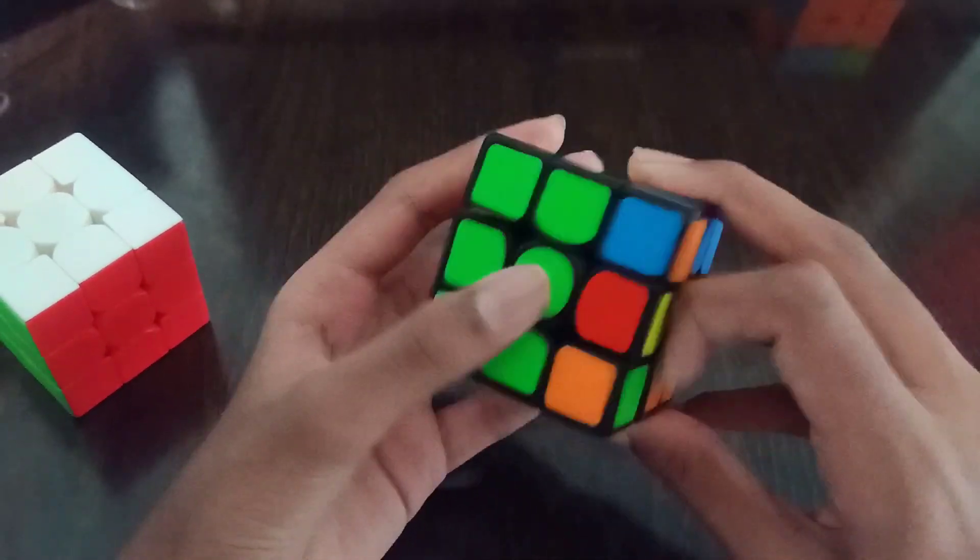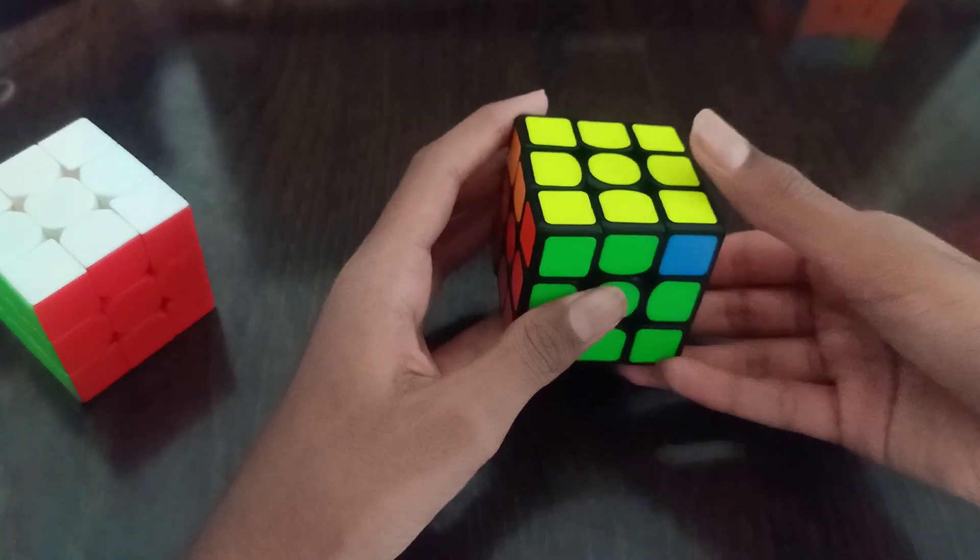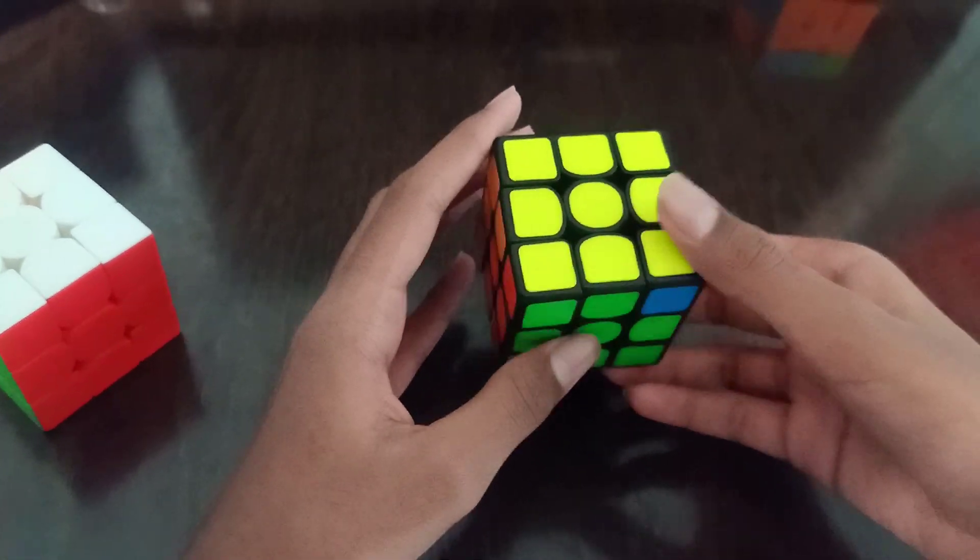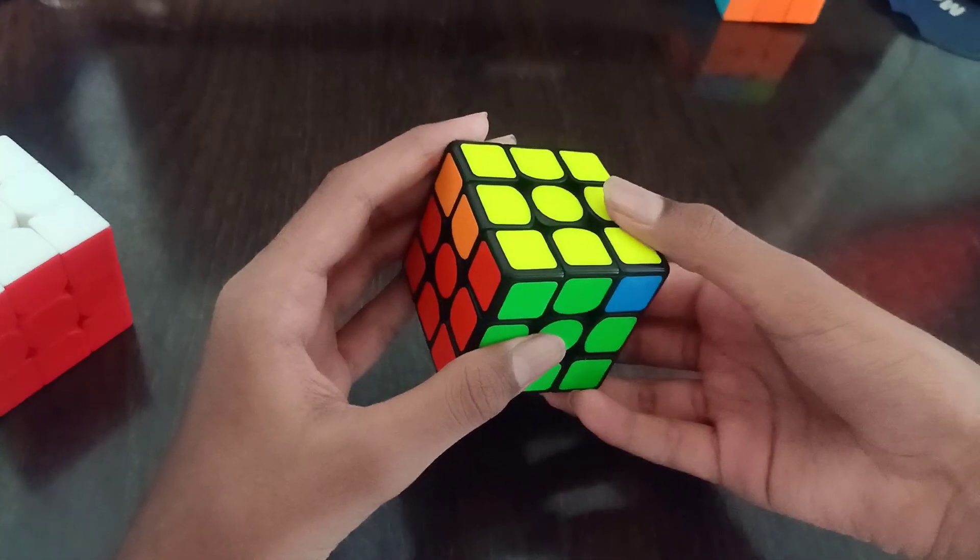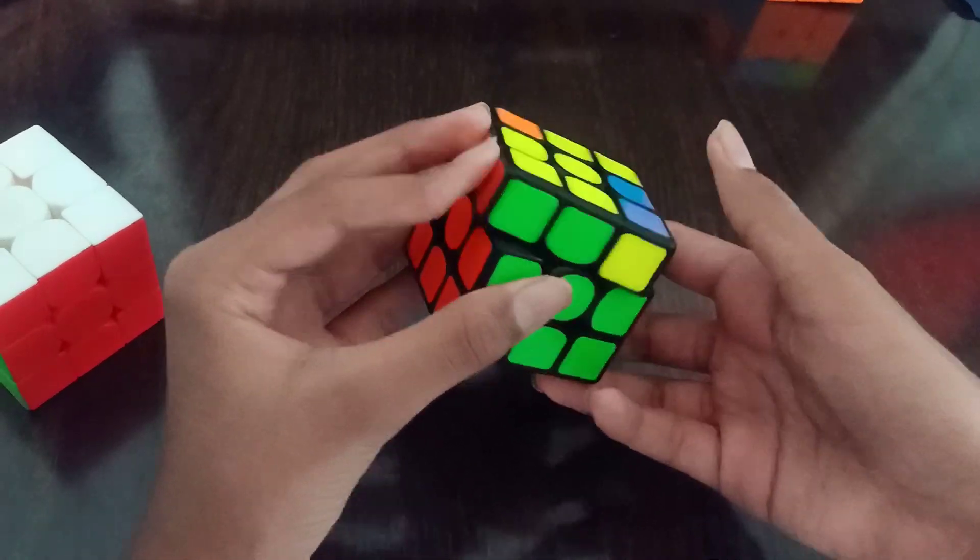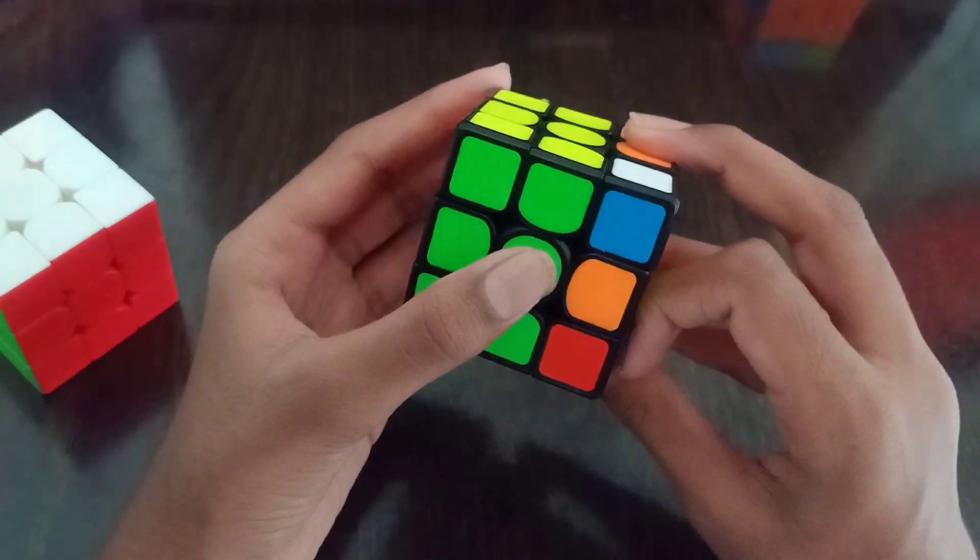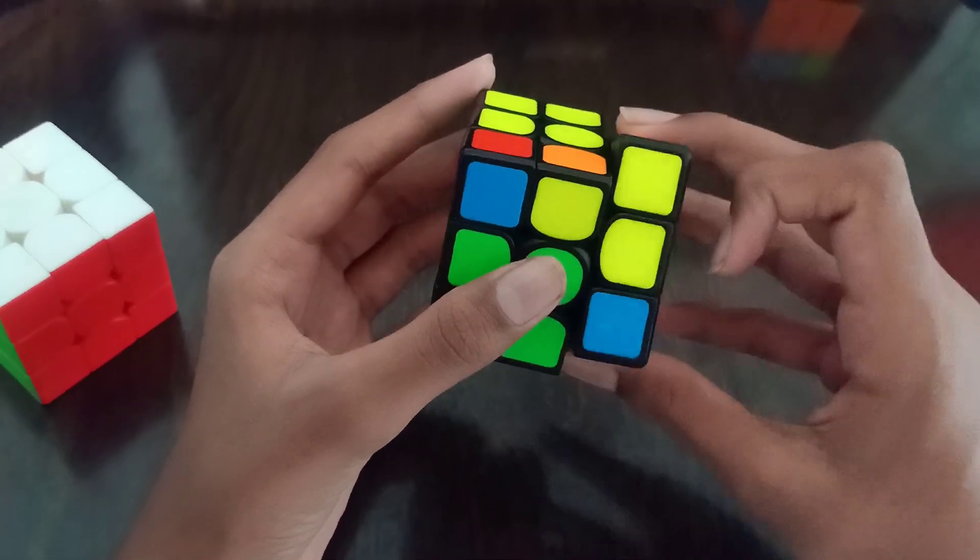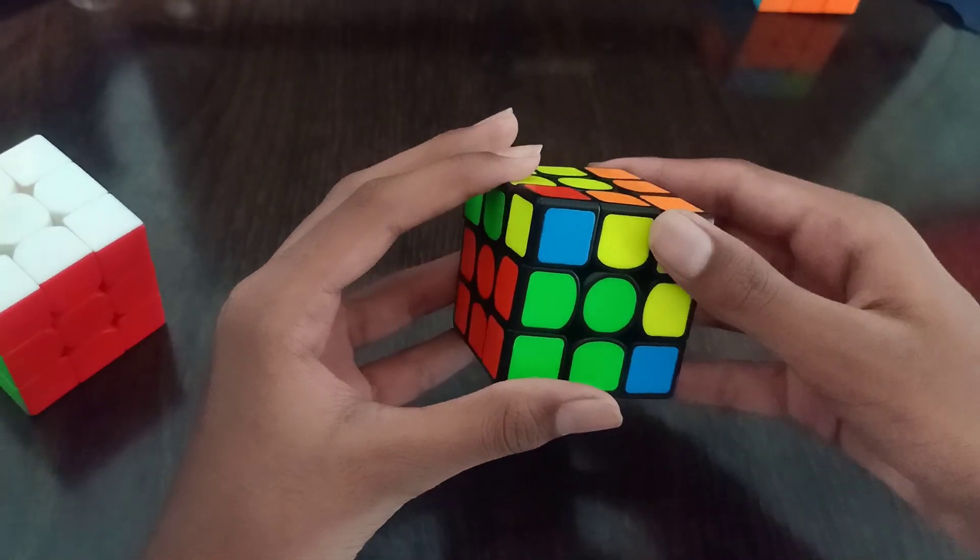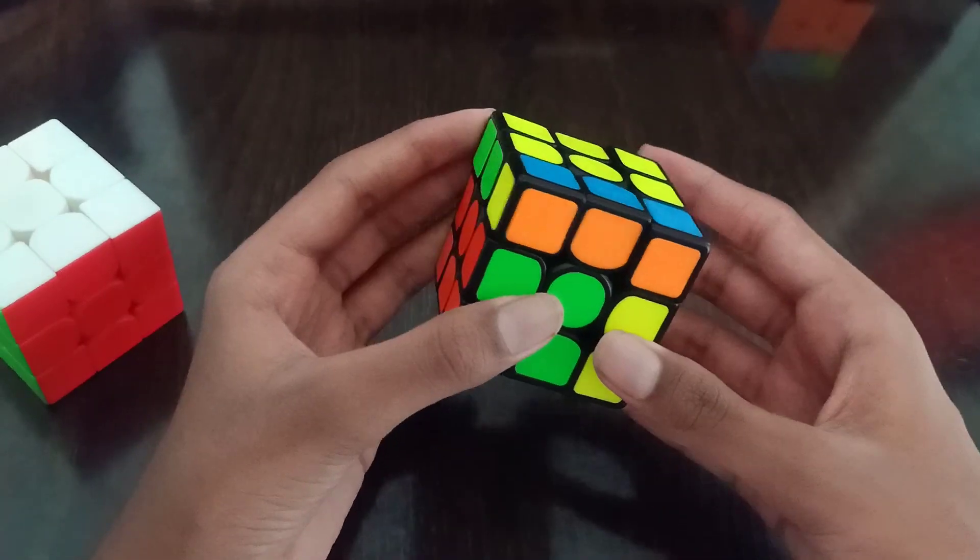And to memorize it, we do some R and U sequence of moves in starting. And do a R prime F U F prime and R U R prime, and here we do a reverse sledge and U prime R.